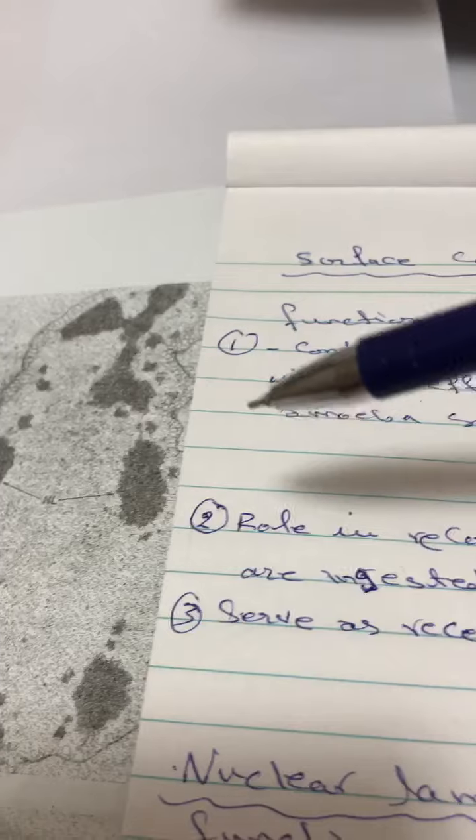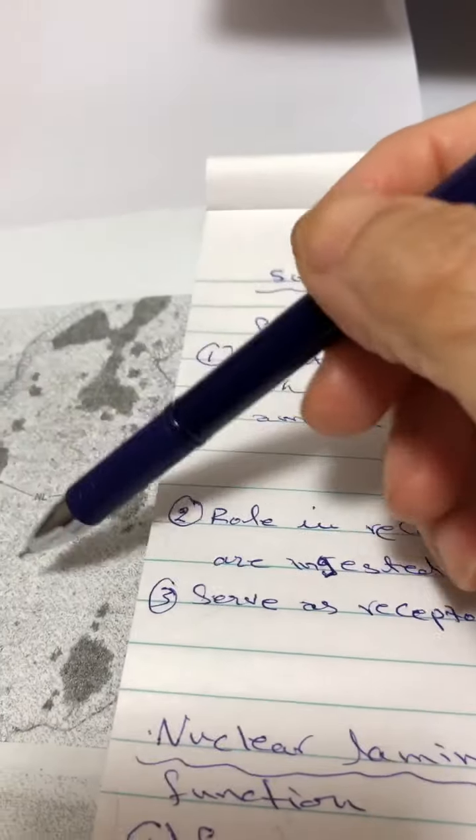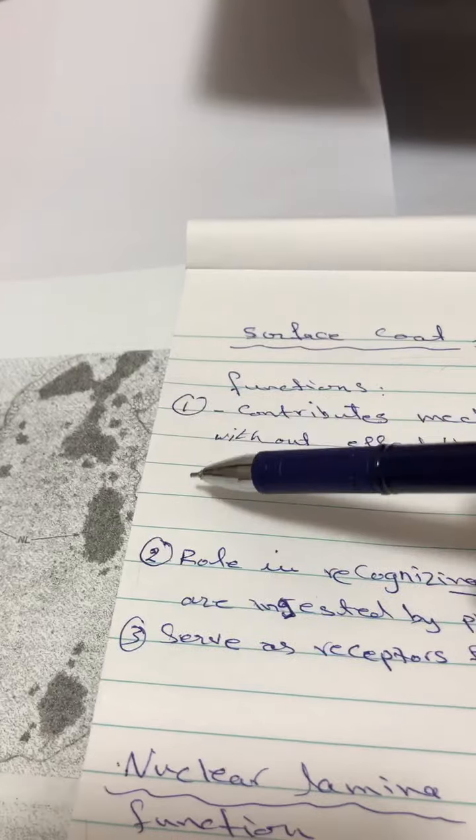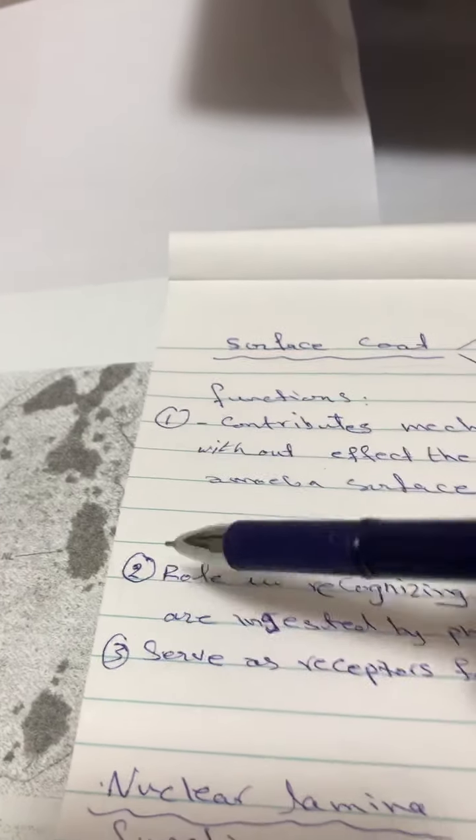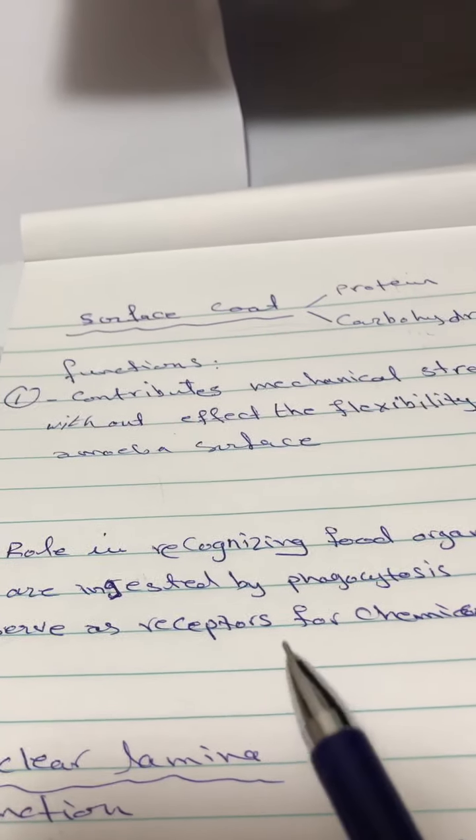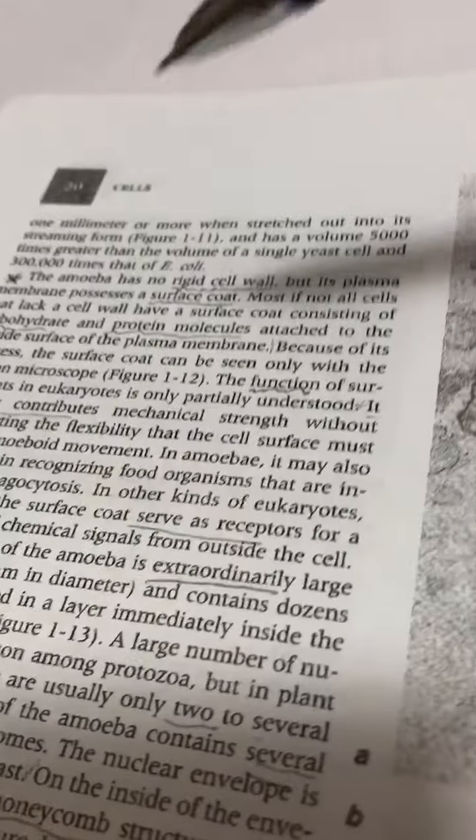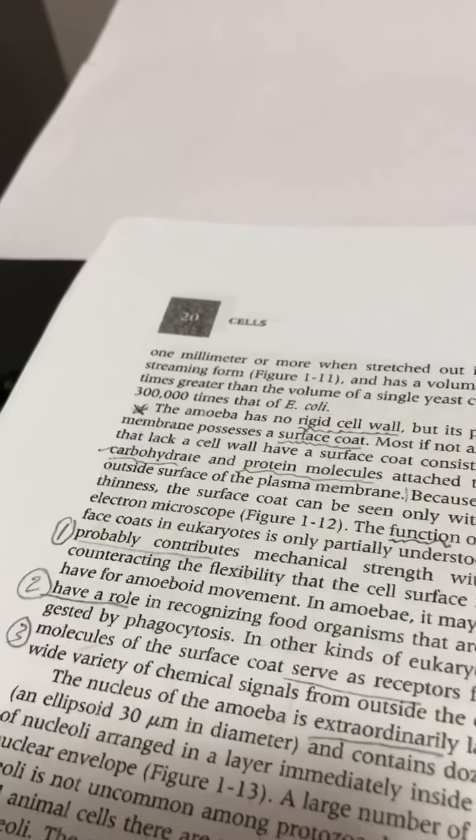Number three, the surface coat serves as a receptor for mechanical signals. The surface coat works as a receptor for these signals. This is about the surface coat of amoeba.